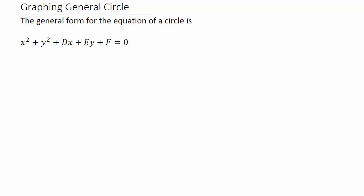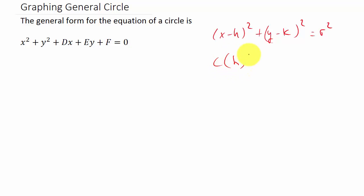Here's another video on graphing a circle. My other video covers graphing a circle when it's in standard form. If you remember, standard form is (x minus h) squared plus (y minus k) squared equals r squared, where the center is (h, k) and the radius is r. In order to graph a circle that's in general form, we need to convert it to standard form to get our center and radius.